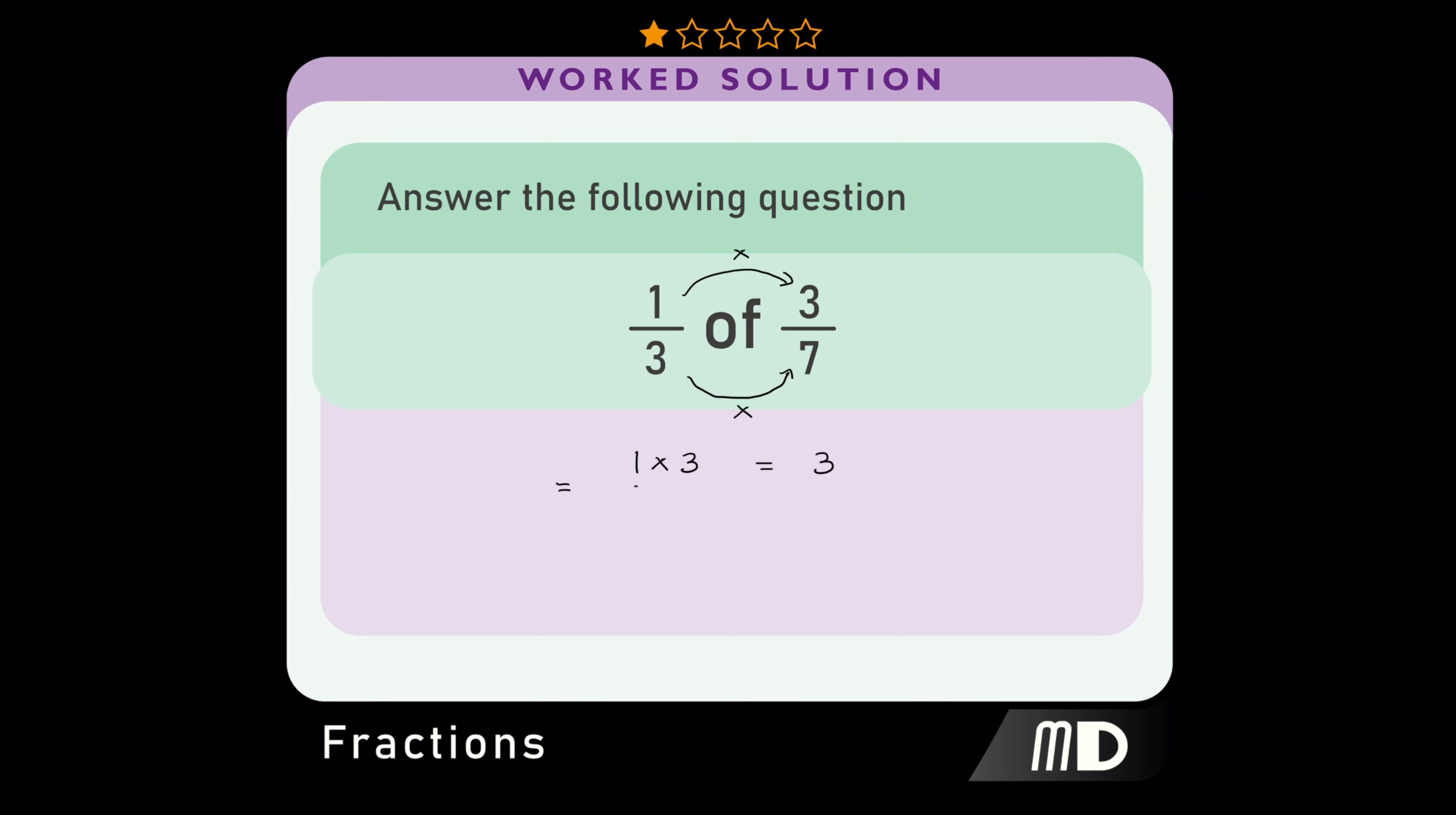The denominators of the fractions are three and seven. Three multiplied by seven is twenty-one. So the denominator of our answer is twenty-one.